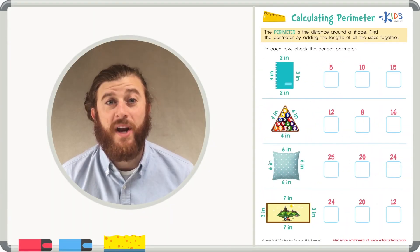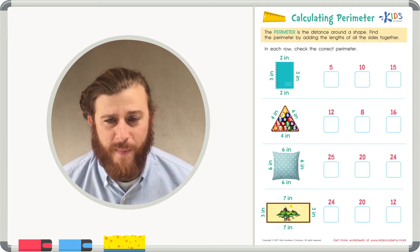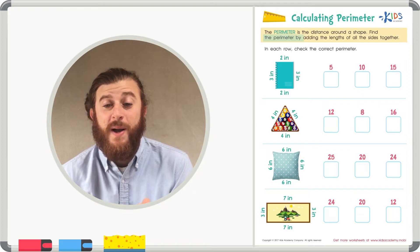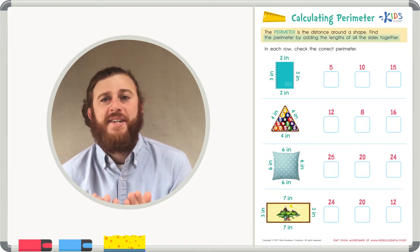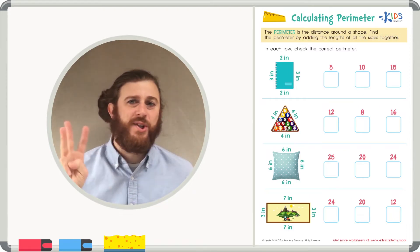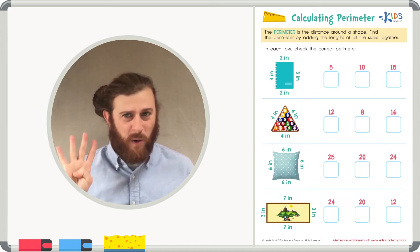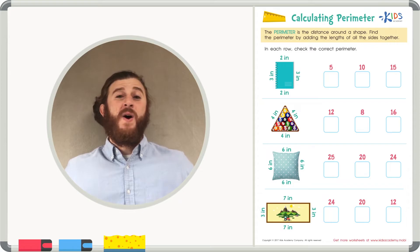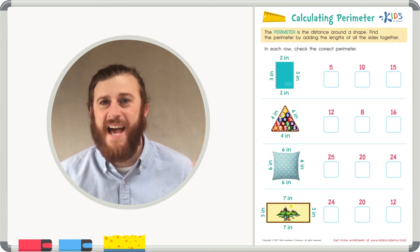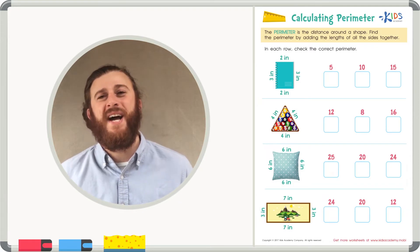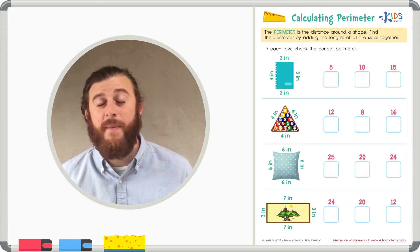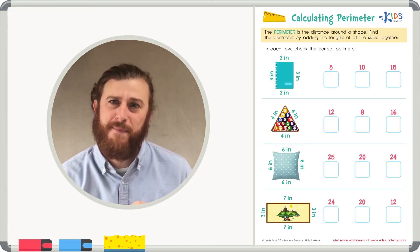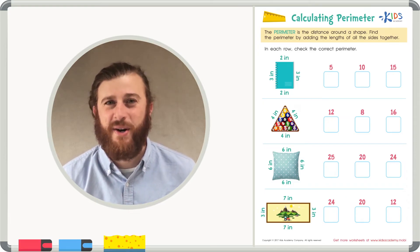Today we're going to be looking at a worksheet called Calculating Perimeter. Perimeter is the distance around a shape. Find the perimeter by adding the lengths of all the sides together. It doesn't matter if there's three sides like in a triangle, or four sides like in a rectangle, or five sides like in a pentagon, or a hundred sides. Just add the sides together. Making your work nice and neat is a great way to make these problems even easier. I have a few tricks to show you with some of these shapes. Let's read the directions and get started right away.